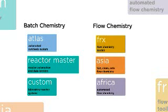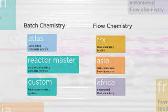Our flow product families are called FRX, Asia and Africa. Our products make flow chemistry cost-effective and easy to use.